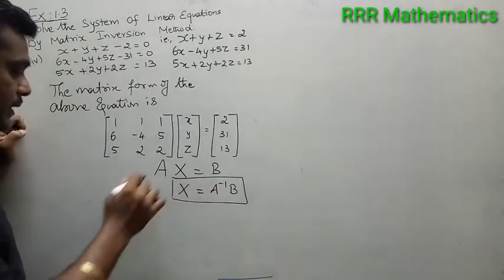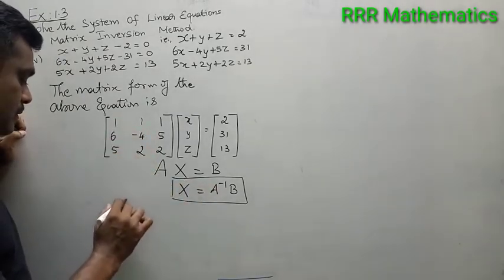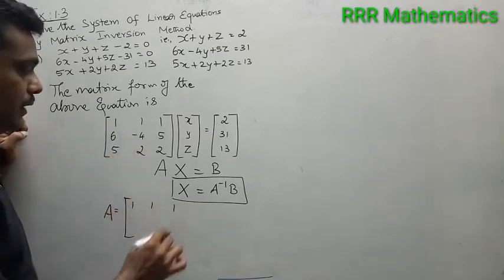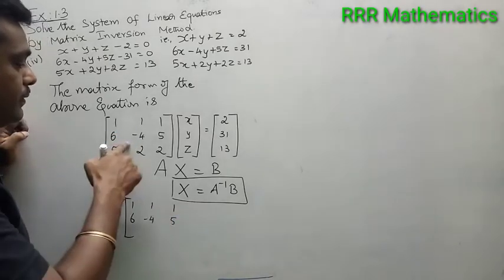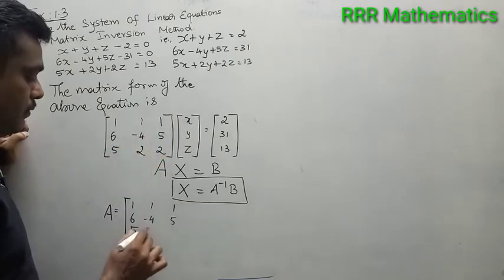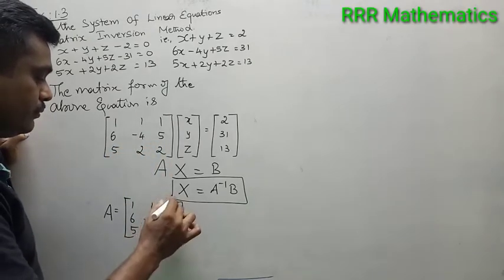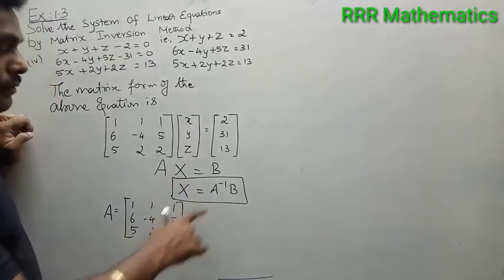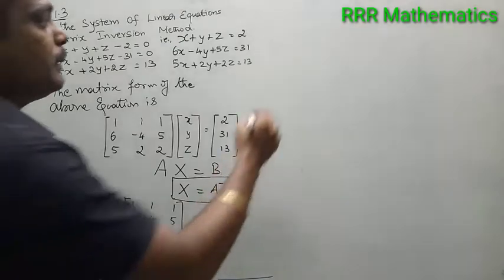What is A? A is the matrix with rows: 1, 1, 1 then 6, minus 4, 5 then 5, 2, 2. Got it? First find the inverse — first find the determinant of A.